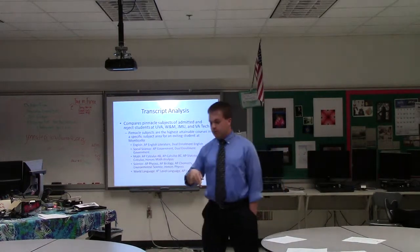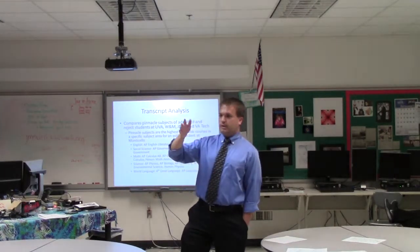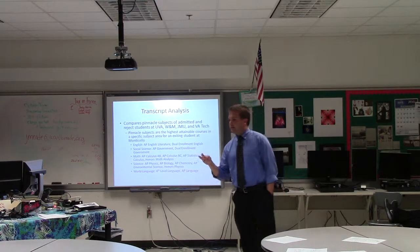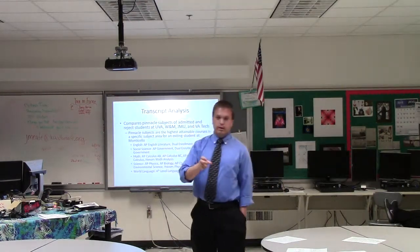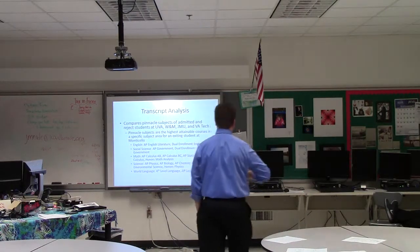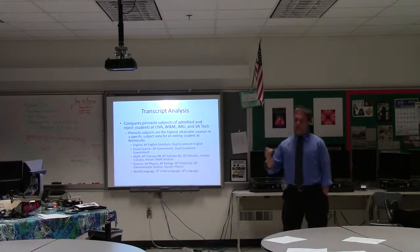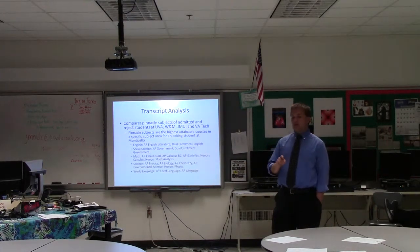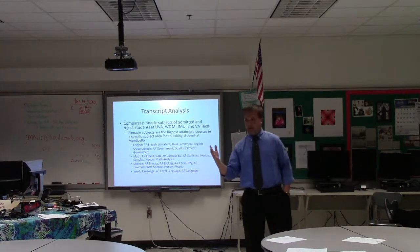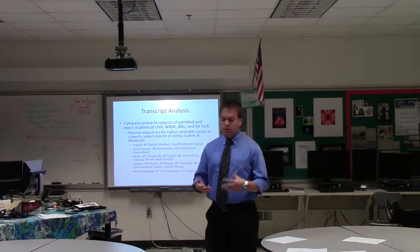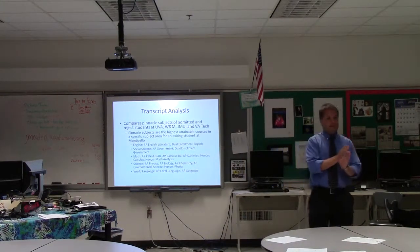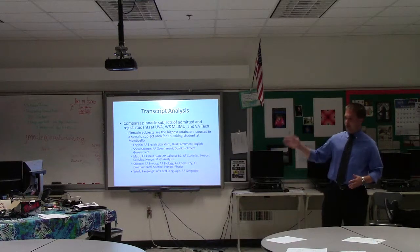For the transcript analysis, I looked at every kid who got accepted versus every kid who got rejected to four schools: UVA, JMU, William & Mary, and one other. I assessed them on pinnacle subjects — the highest subject area in a respective core area a student could be expected to achieve. For English: AP English or dual enrollment English. For social sciences: AP Government. For math: AP Calculus AB, BC, AP Stats, honors calculus, or honors math analysis. For science: AP physics, biology, chemistry, environmental science, or honors physics. For world language: fourth level or AP language.